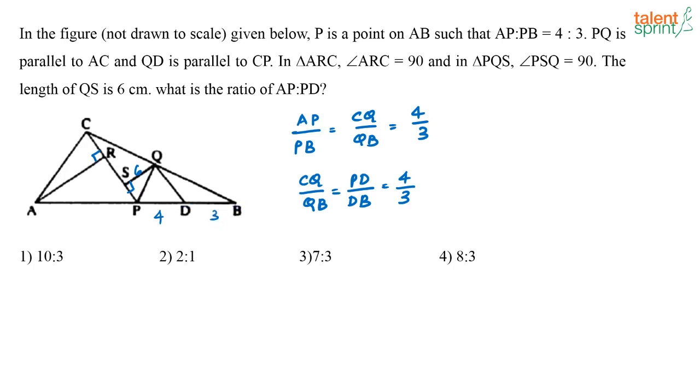So what will be the ratio between PB and PD? What can you say about that? See, from here I can say that PD by DB is 4 by 3. That means if PD is 4, then DB is going to be 3. So what is PB by PD? What can I say? What will PB by PD be? It will be nothing but 7 by 4, correct?